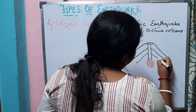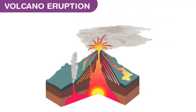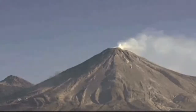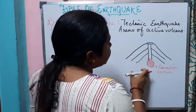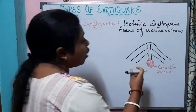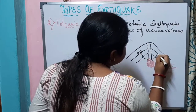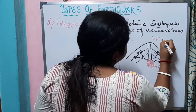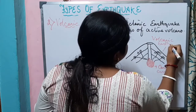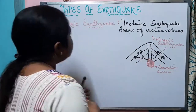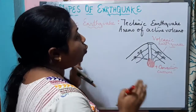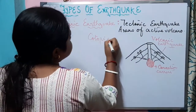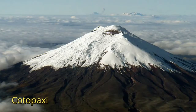Magma rises from the mantle due to convection currents, making its way through the crust to the surface of the earth. As it moves through the crust, it comes in contact with surrounding rocks and breaks them apart, generating the volcanic earthquake. So a volcanic earthquake is a special type of tectonic earthquake confined to areas of active volcanoes — for example, in the year 2002 in Cotopaxi, a volcanic earthquake occurred.